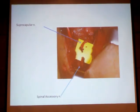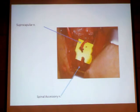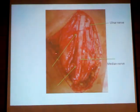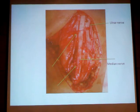The spinal accessory nerve supplies the trapezius and is a key donor. The posterior division supplies the supraspinatus and infraspinatus, contributing to shoulder abduction and external rotation. The musculocutaneous nerve innervates the biceps and brachialis, providing the power for elbow flexion through dual innervation.